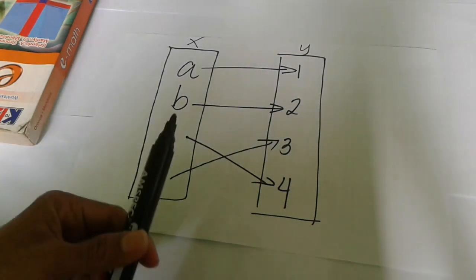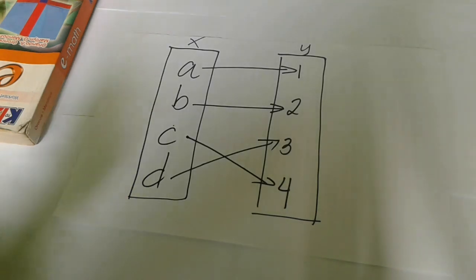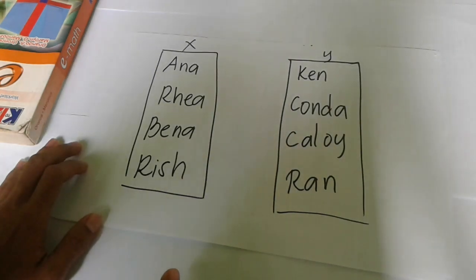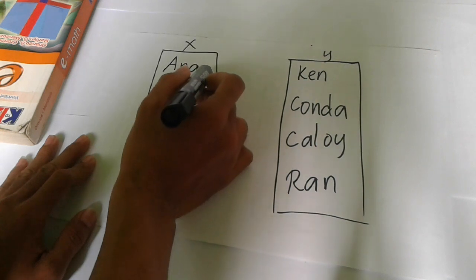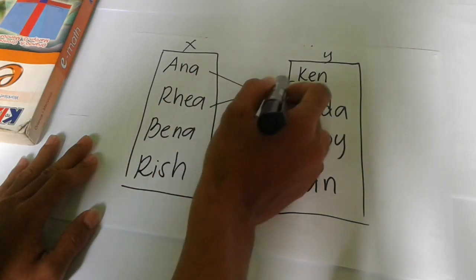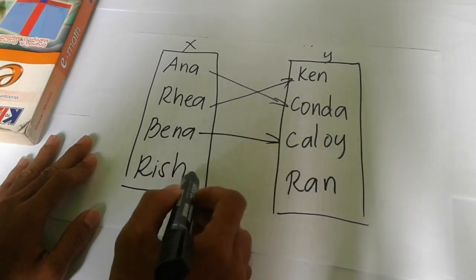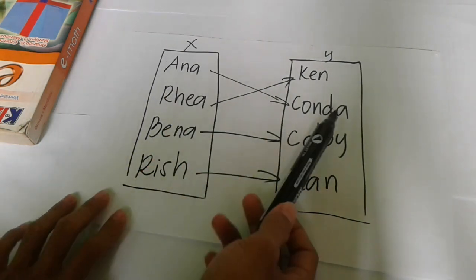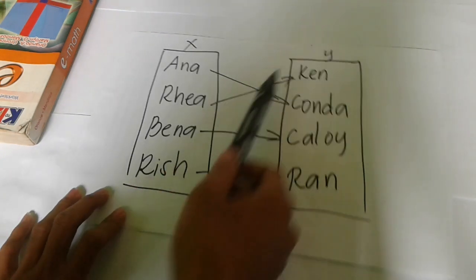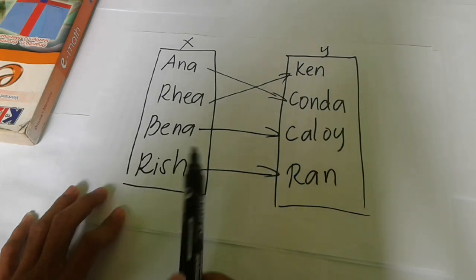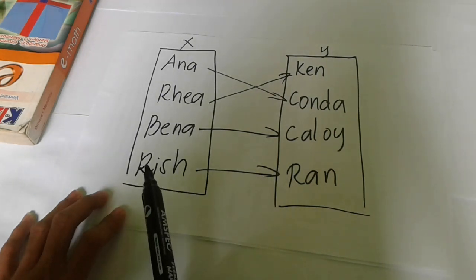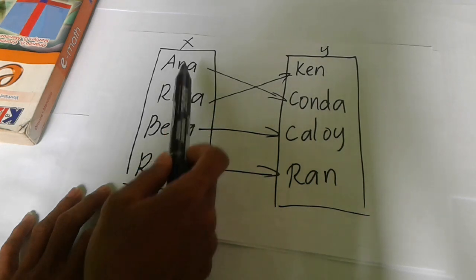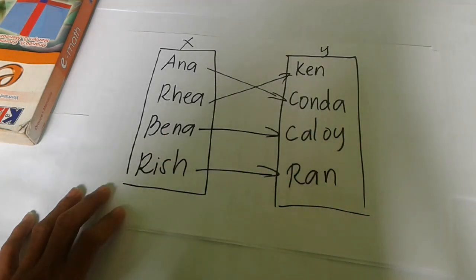For a real-life example using people: Ana is with Onda, Reya is with Ken, Bena is with Kaloy, and Rish is with Ron. That's a one-to-one relation. Ana is with Onda — so there's Ana-Onda — then Reya with Ken, Bena with Kaloy, and Rish with Ron. No repeating elements in X or the domain corresponding to the codomain or range Y.